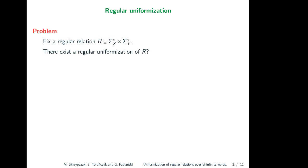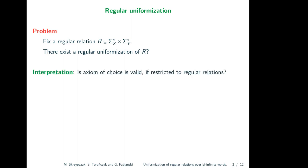We restrict our relation to regular relations, and specifically to relations between words — finite words, infinite words, or bi-infinite words. We ask whether we can find a regular uniformization. This can be interpreted as checking the validity of the axiom of choice when we restrict ourselves only to regular sets. Now I have to explain what I mean by a regular relation.